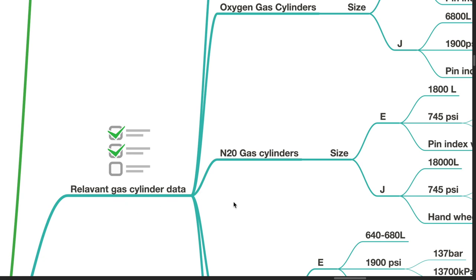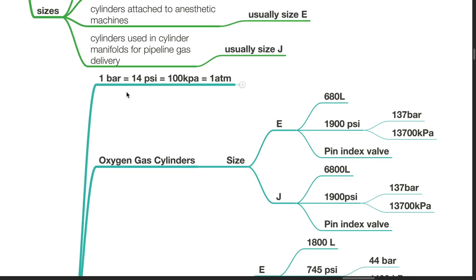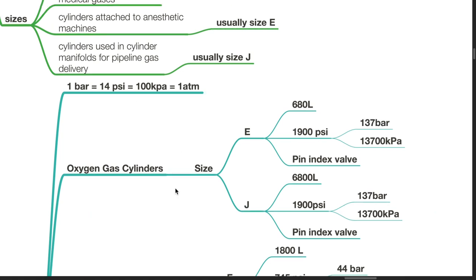Relevant gas cylinder data: 1 bar equals 14 psi equals 100 kPa equals 1 atm. Oxygen gas cylinders size E and J: For size E, 680 litres of oxygen is present at 137 bar and it uses a pin index valve. For size J, it holds 6800 litres at 137 bar and uses a pin index valve.